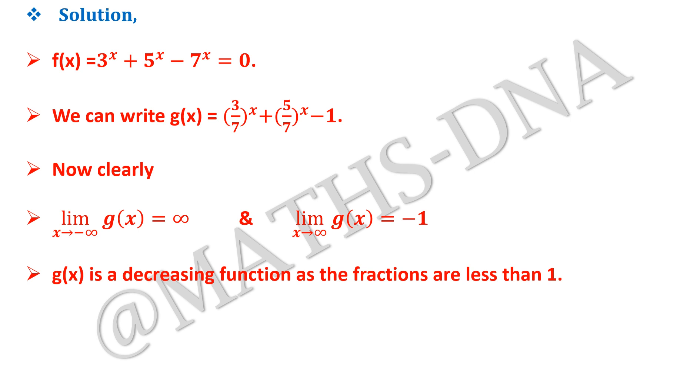Now why does this happen? It happens because g of x is a decreasing function as the fractions 3 by 7 and 5 by 7 are less than 1. So we get the above limits and from the above we can get that g has only one real root, and so thus the given equation, as 7 raised to x is never 0.